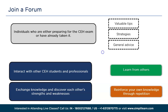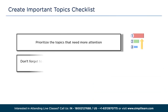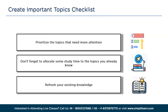The second thing you can do is create an important topics checklist. Once you have identified the areas where you lack knowledge, it's important to make a checklist of study topics. Prioritize the topics that need more attention, but don't forget to allocate some study time to topics you already know. The main focus should be on addressing knowledge gaps first, and once you have addressed those gaps, you can revisit the other topics later.